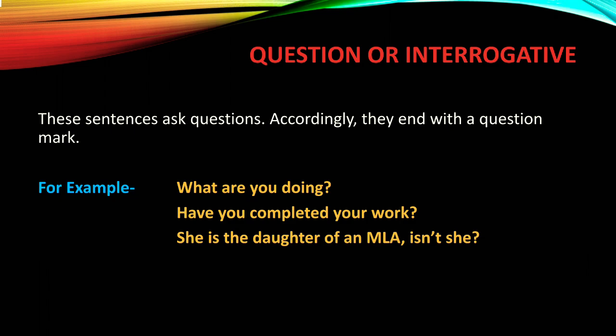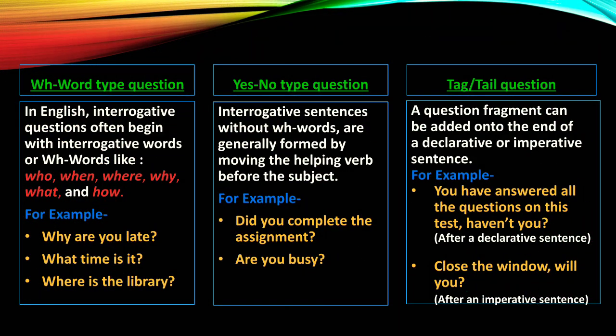In the second question, 'Have you completed your work?' — you can answer it by saying only yes or no, so this is a yes/no type question. And in the third question, the question starts with a mere statement that she is the daughter of an MLA, and at the end there is a tag question asking 'Is it so?' So, there are three types of interrogative sentences: WH-word type question, yes/no type question, and tag or tail question.